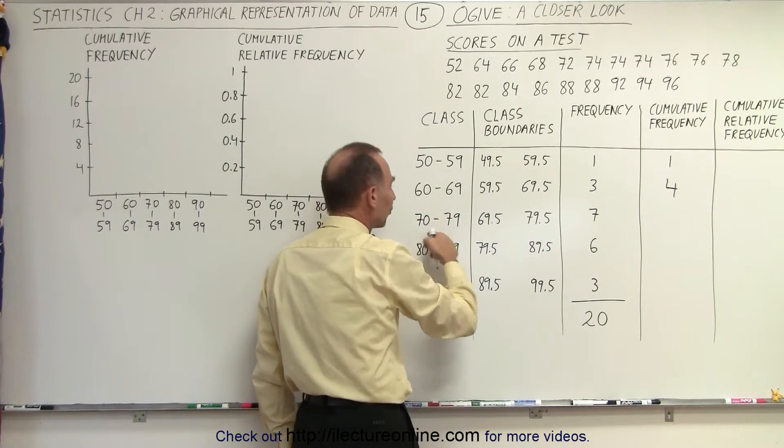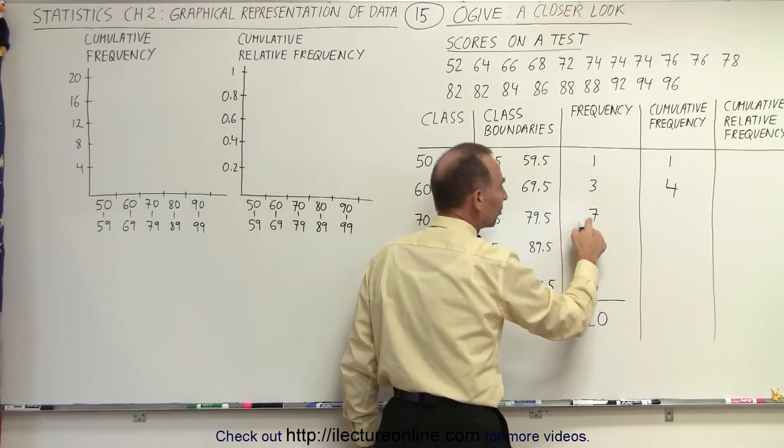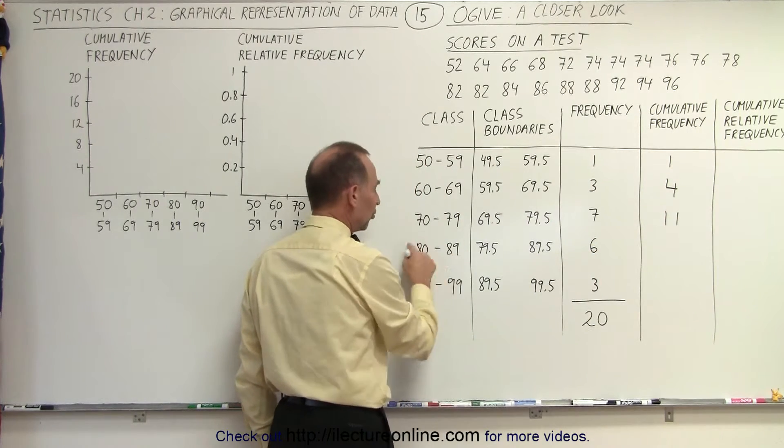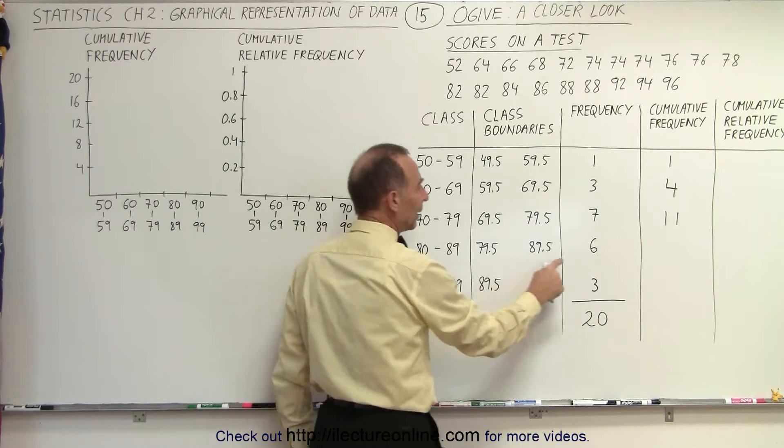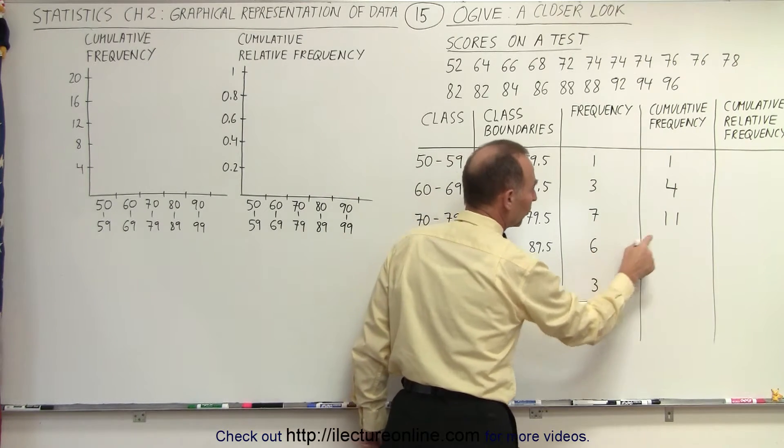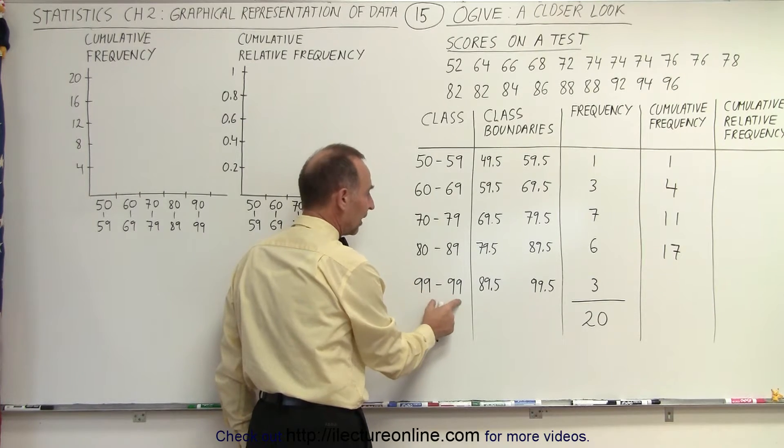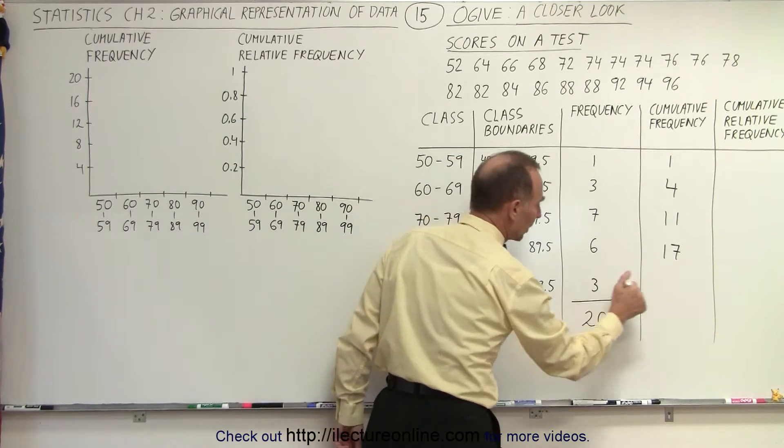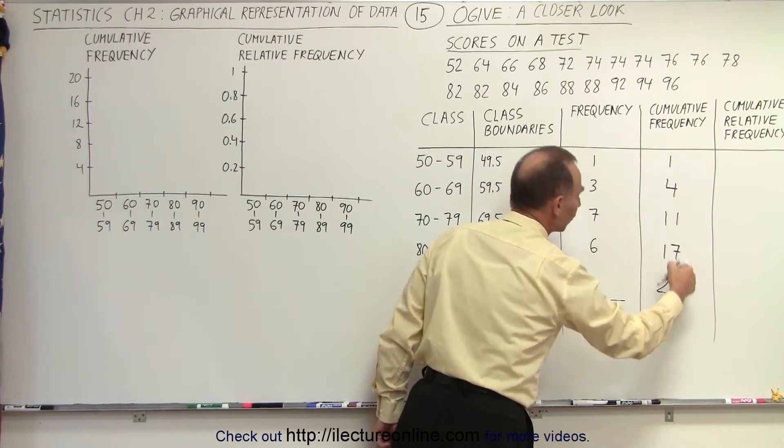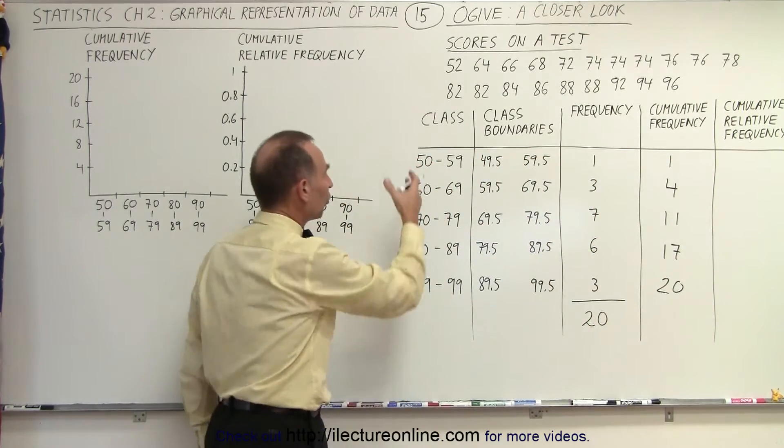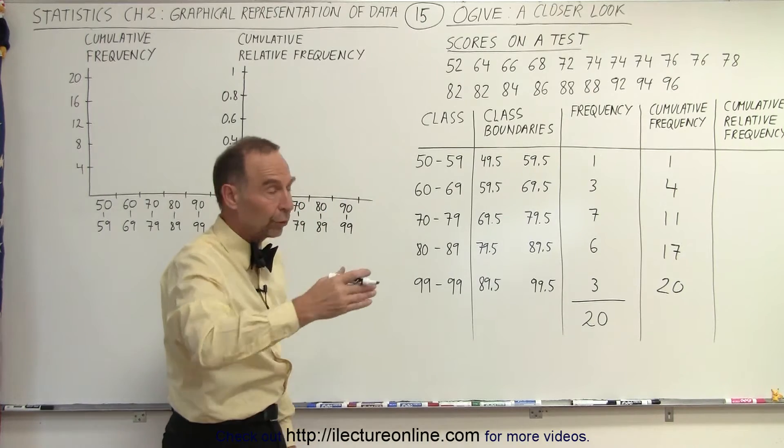Then if we include the first three classes, we add an additional 7 to the 4 and we get 11. Then if we add the additional classroom 80 to 89, we add the additional six data points, add it to 11, we get 17. And finally, when we add the last class to that, we add another 3 and we have a total of 20. So these are the cumulative frequency data points associated with each class.